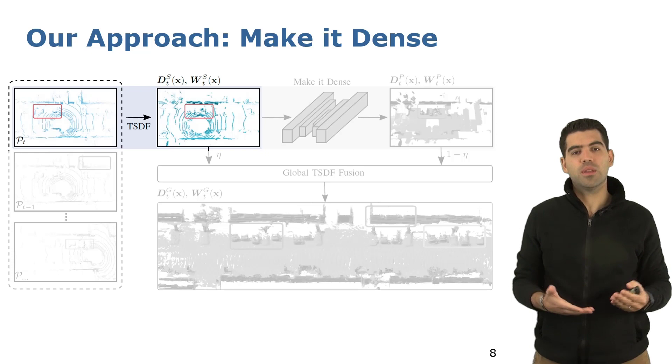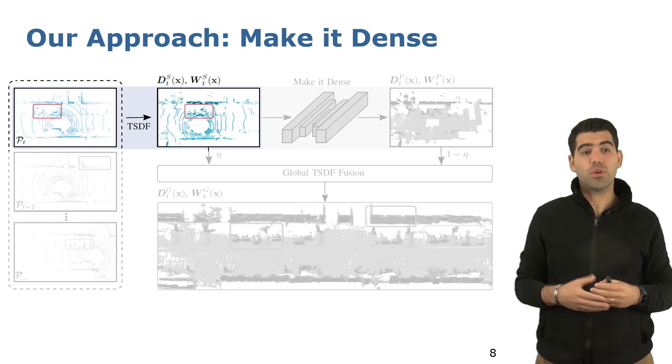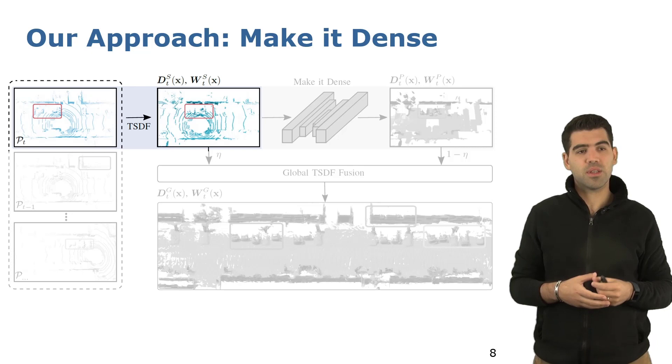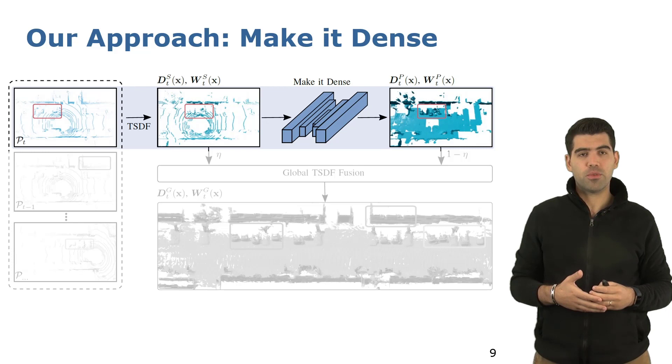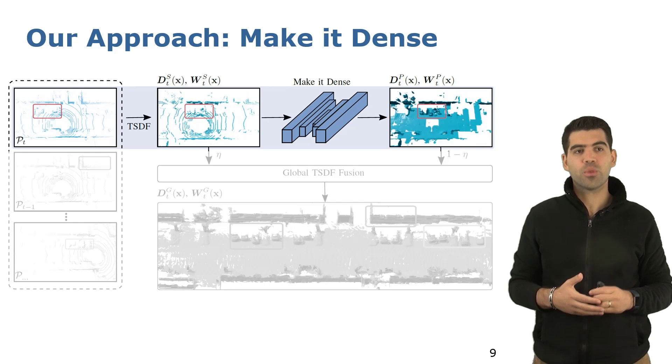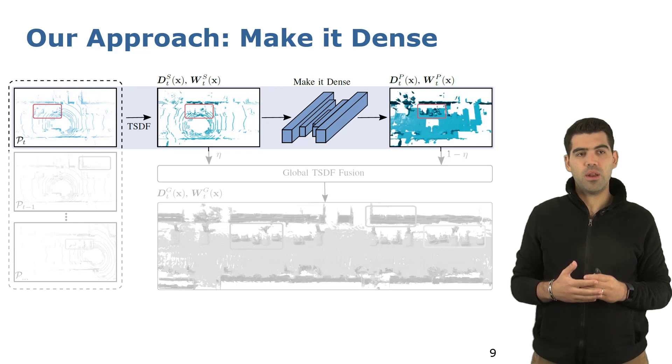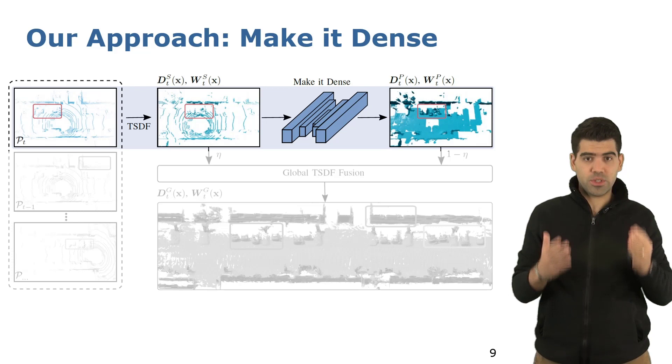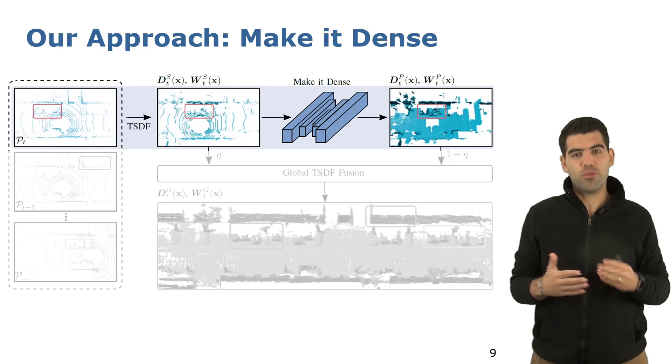This means that this map might have holes or incomplete reconstruction results that can affect the performance of the robotics tasks that need to make use of this map. To improve the mapping results, we process the input TSDF representation and we make it dense. We pass the TSDF volume through our fully convolutional 3D CNN, obtaining a dense representation of the input scan. As a result of this step, we end up with two TSDF volumes: one directly obtained from raw sensor data and one obtained from the output of our network.